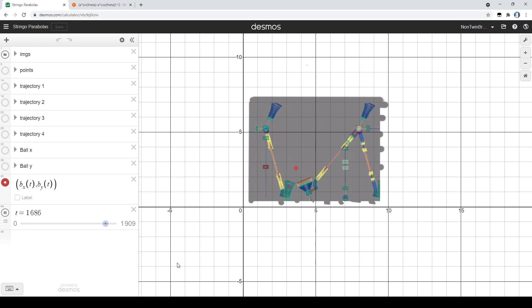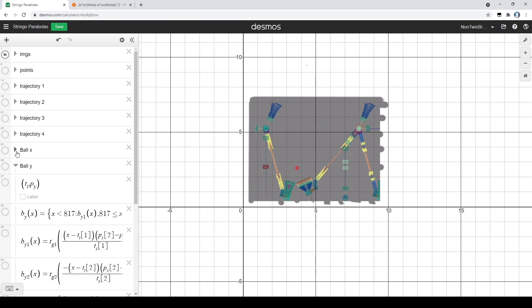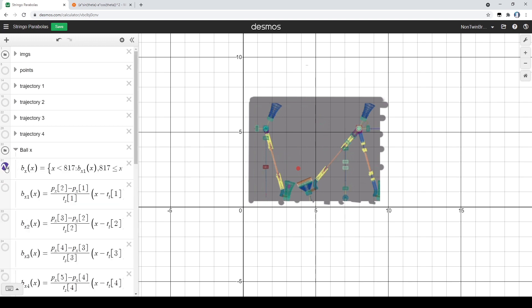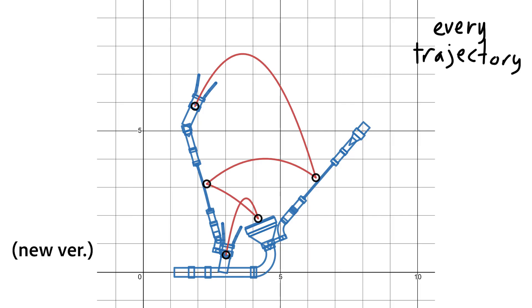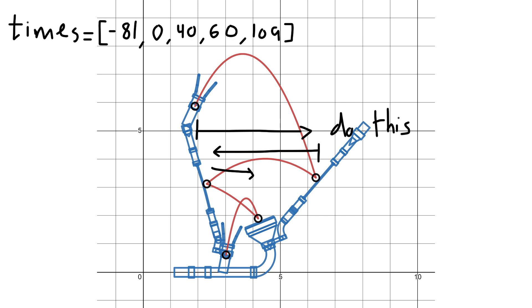Anyway, the first instrument I graphed was actually like about a year and a half ago. I called them the stringos. This is where I first succeeded in animating a marble bounce around. The idea is actually kind of simple. Every path the marble takes can be graphed in the XY plane as a parabola.